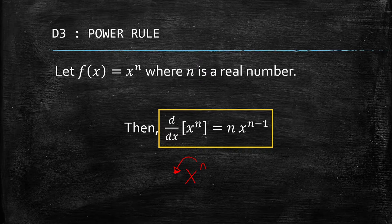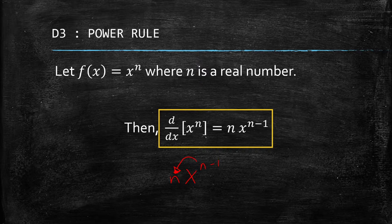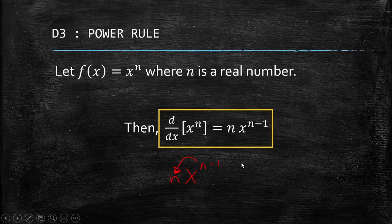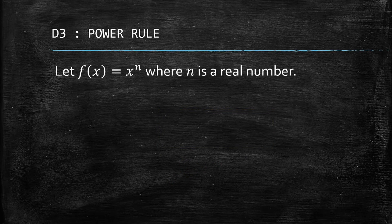So if you observe, n went down, and then we simply subtract 1 from the exponent. That's how you get the derivative of the function — this is a shortcut, instead of using the limit definition of the derivative. Let's try getting a proof of this; let's prove the Power Rule.